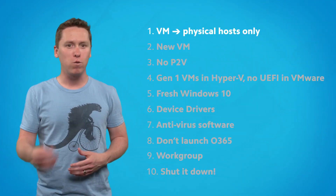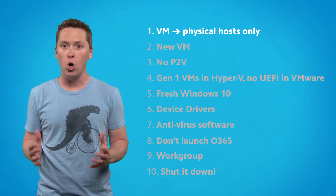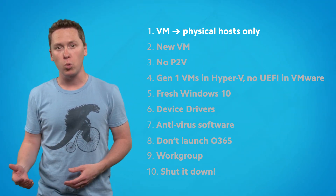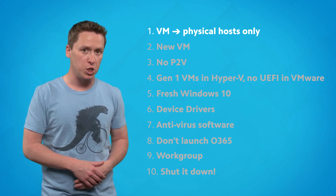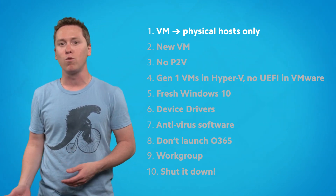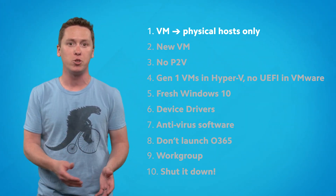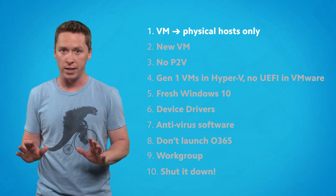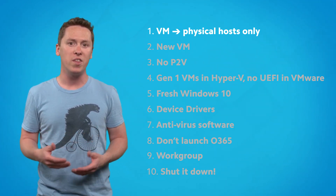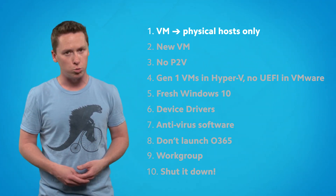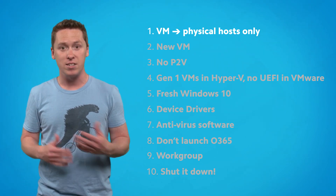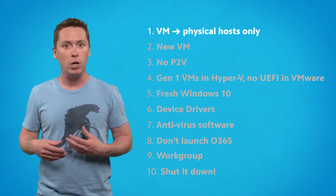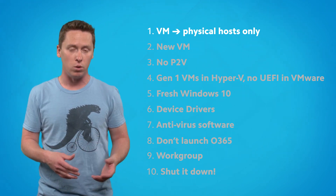Number one: install your virtualization software on physical hosts only. If you happen to do a lot of your work within a virtual machine and want to set up something like Oracle VirtualBox to keep your new VM separate from your existing infrastructure, that's fine. Just don't install it within another virtual machine. In many cases it simply won't work, and even if it does, it won't work well and it will be more confusing than it is useful.